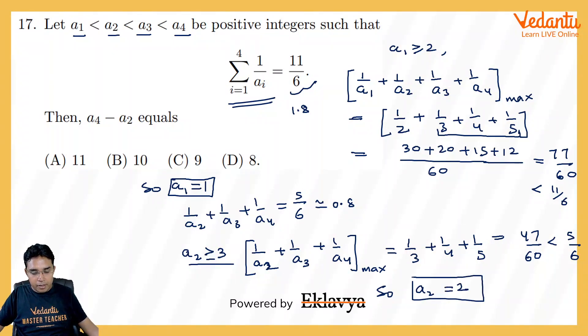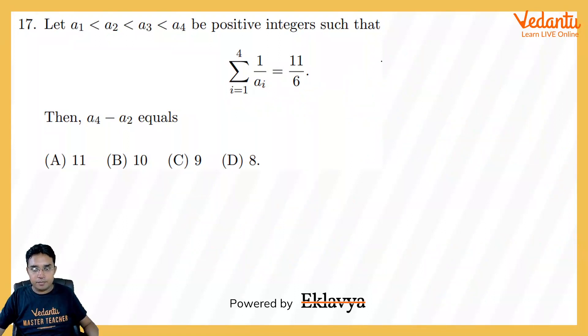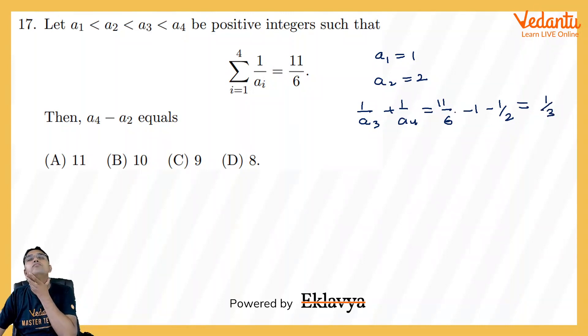So far we have found that a1 will be 1 and we have found a2 to be equal to 2. So remaining 1 upon a3 plus 1 upon a4 will be equal to 11 by 6 minus 1 minus 1 by 2, which will be 5 by 6 minus 3. So I think it will be 1 by 3. 5 by 6 minus 1 by 2, 2 by 6, 1 by 3, that is correct.